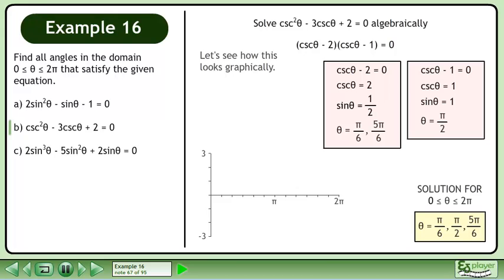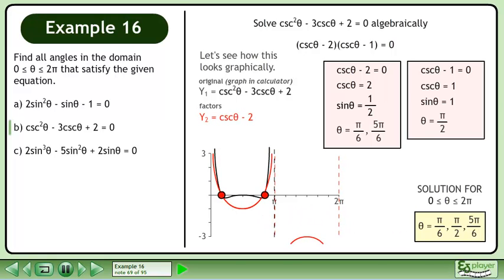Let's see how this looks graphically. Graph the original function y1 = csc²θ - 3cscθ + 2 in a calculator. Now graph the first factor y2 = cscθ - 2. This gives us the roots π/6 and 5π/6. And graph the second factor y3 = cscθ - 1. This gives us the root π/2.